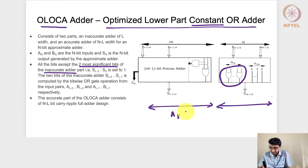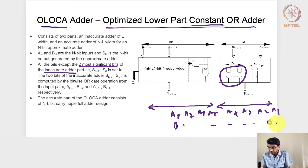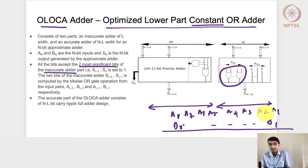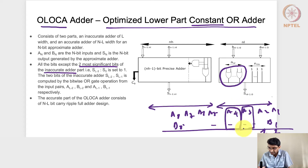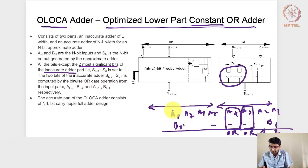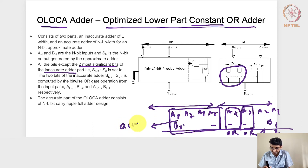For an 8-bit adder with inputs A8 down to A1 added with B, irrespective of the values of A2, A1, B2, and B1, we consider those bits directly as constant one. For the next two bits, instead of an XOR operation, we use A4 OR B4 and A3 OR B3 to get the results — so these are OR outputs.